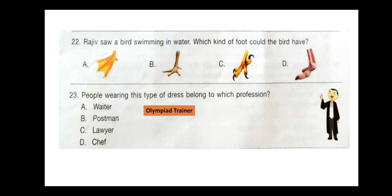Question 22. Rajiv saw a bird swimming in water. Which kind of foot could the bird have? Look at the pictures and select your answer. The correct answer is option A. Question 23. People wearing this type of dress belong to which profession? The answer is option C — lawyer.